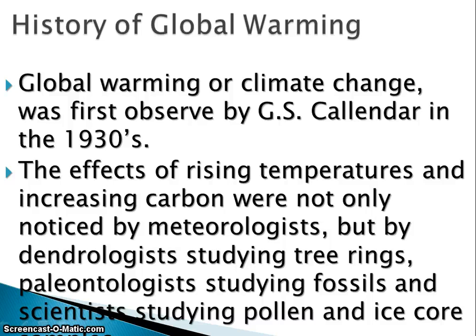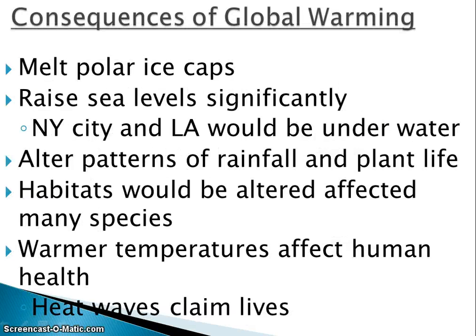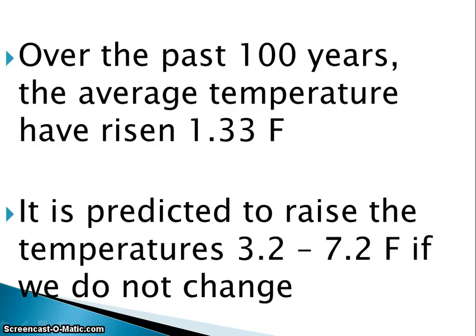Again, this was starting to be observed in the 1930s. The problem is it's going to melt the polar ice caps and raise sea levels — New York City and Los Angeles may one day disappear under water. It alters the patterns of rainfall and plant life. Habitats are going to be altered. Warmer temperatures affect how humans feel, and heat waves in the summer do claim adult lives. Temperatures are still predicted to rise.